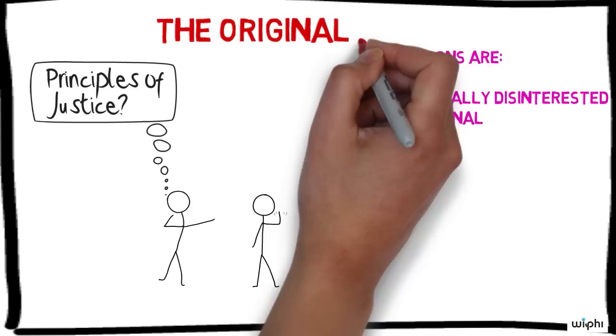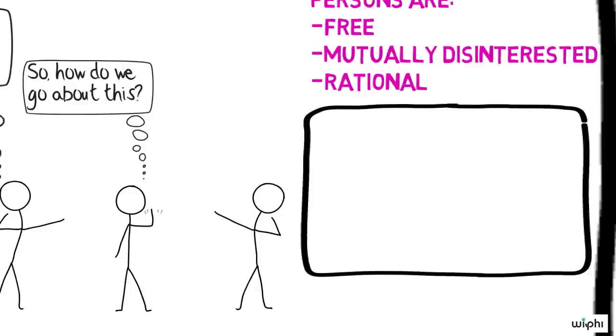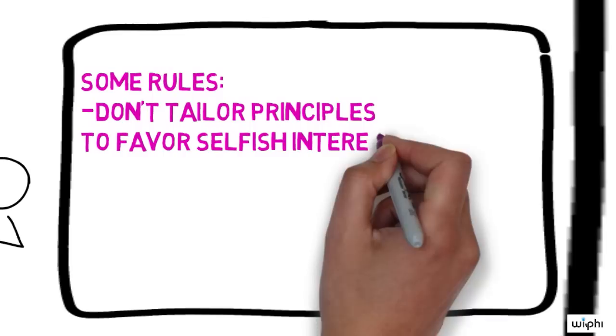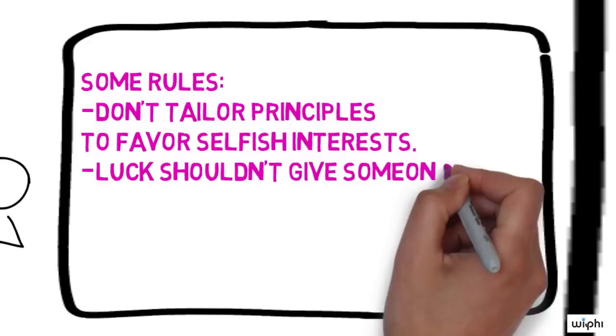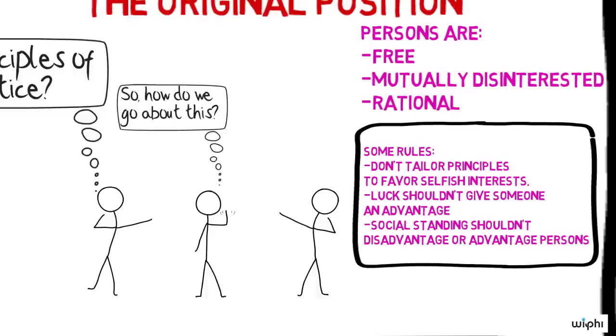Now, what makes the situation fair has to do with the kind of considerations the representatives in this original position can bring to bear when reasoning about the principles of justice. For instance, no one can tailor principles selfishly to favor her particular condition. Also, Rawls does not allow things like natural fortune or social circumstances to be acceptable bases for advantaging or disadvantaging persons.